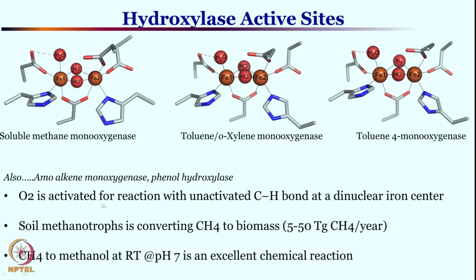For methane monooxygenase, oxygen activation is coupled with unactivated C–H bond activation as well as corresponding hydroxylation chemistry. The source of the di-iron center begins with soil methanotrophs, which convert methane to biomass, and that is one source for methane monooxygenase.